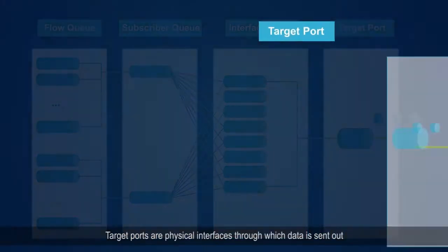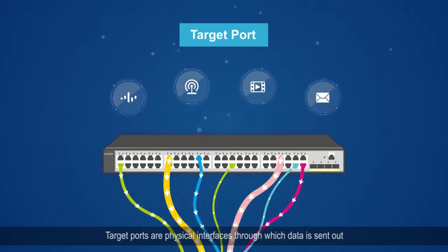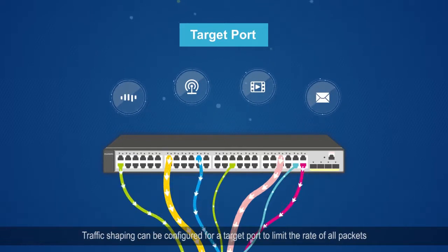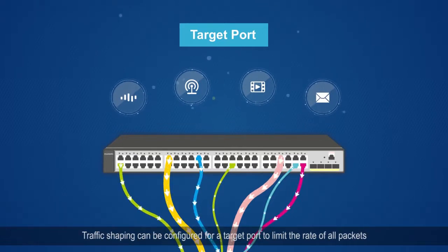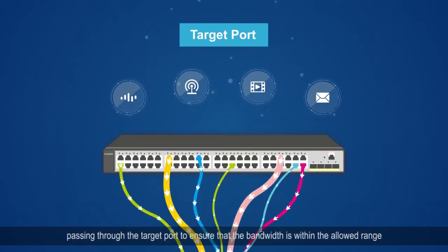Target ports are physical interfaces through which data is sent out. Traffic shaping can be configured for a target port to limit the rate of all packets passing through it, ensuring that the bandwidth remains within the allowed range.